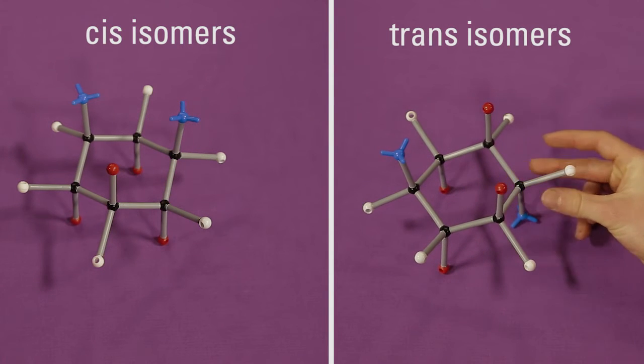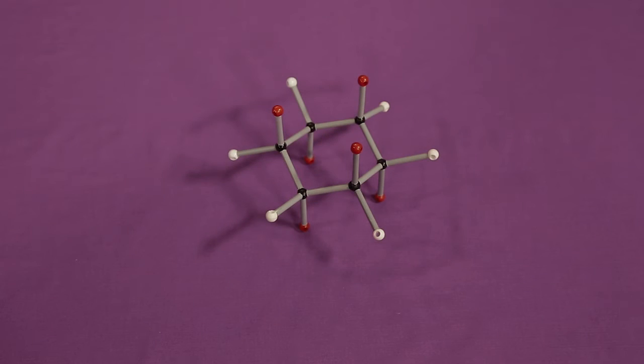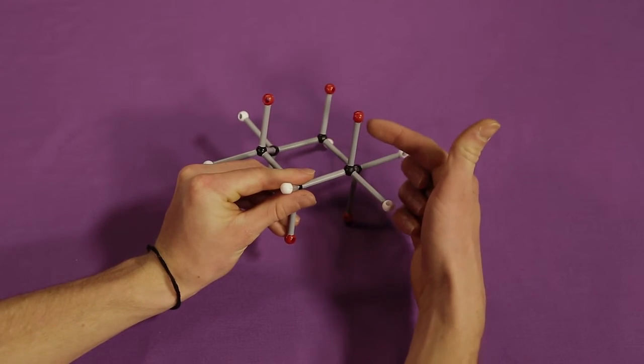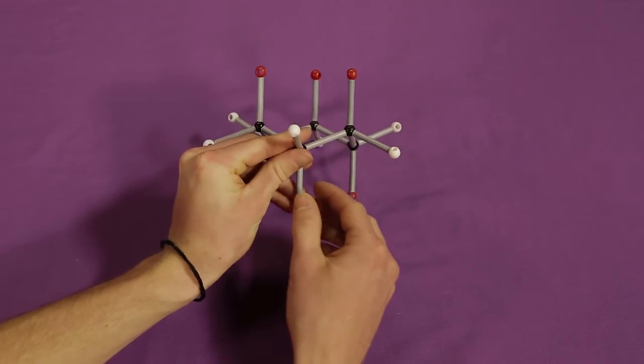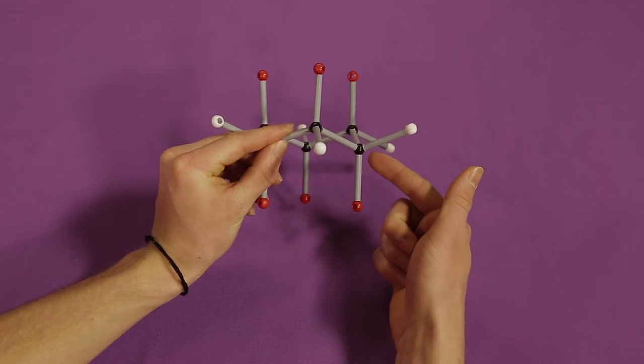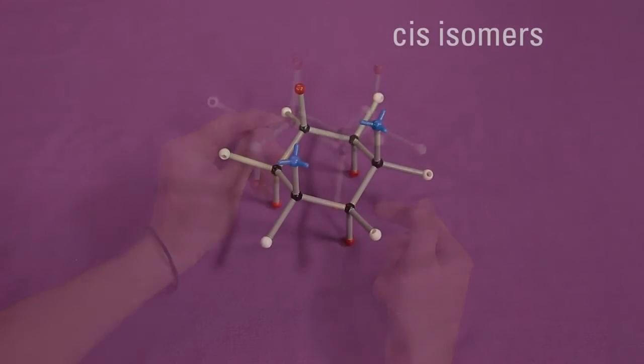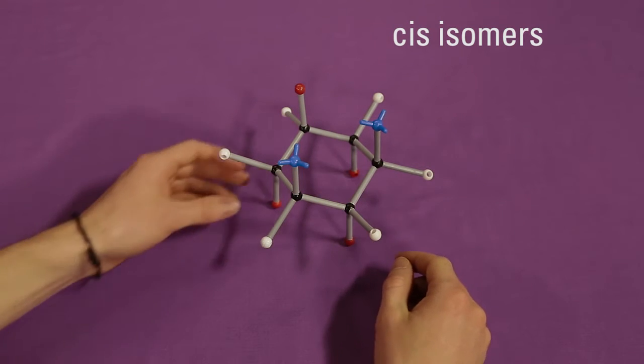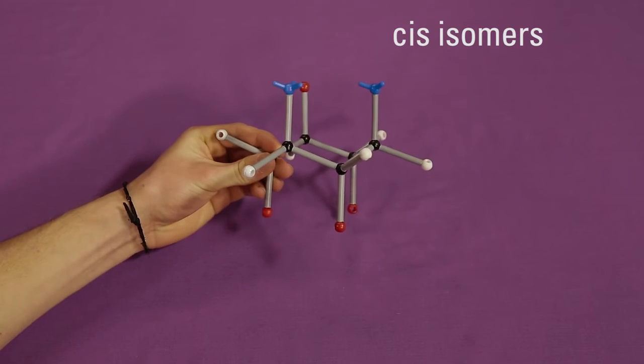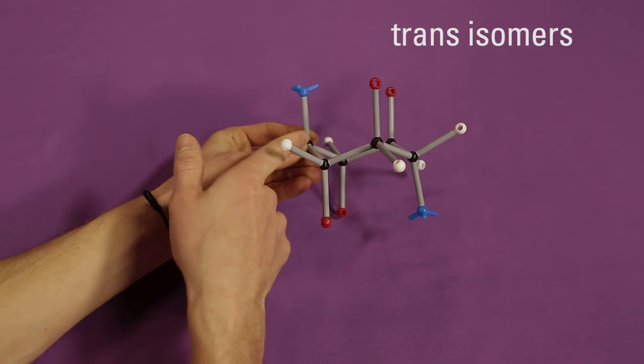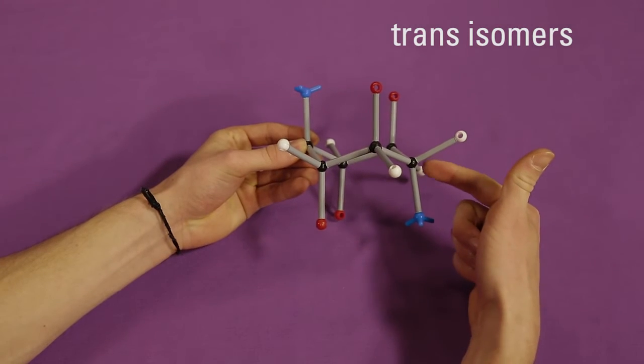You can easily distinguish between cis and trans structures. Remember that each carbon atom has a bond pointing to some degree up and to some degree down. Whether it's in the axial or equatorial position, every bond has an associated direction. For cis isomers, the substituents point in the same direction, either both up or both down. For trans isomers, the substituents point in different directions, one up and one down.